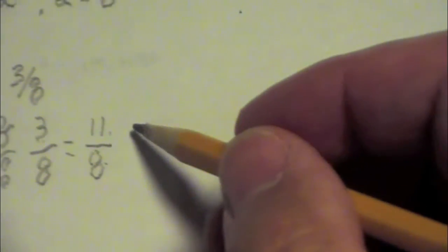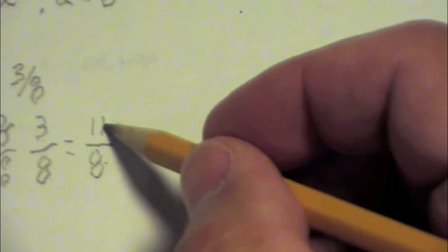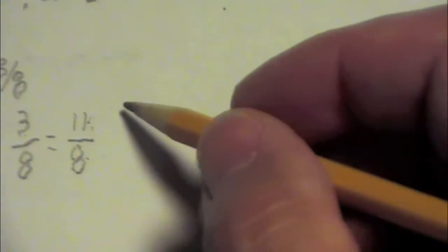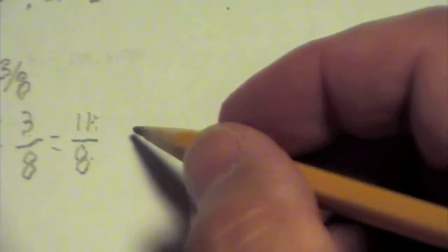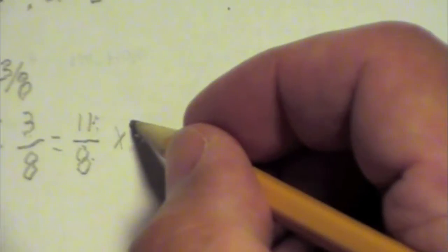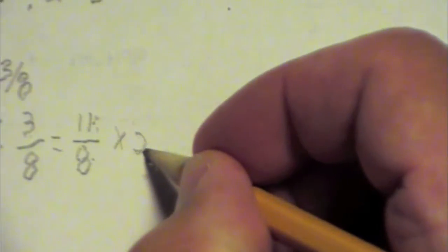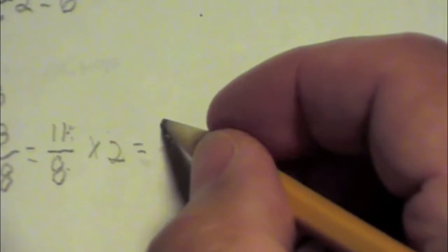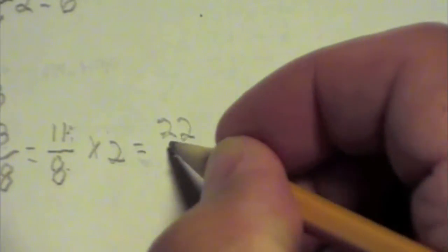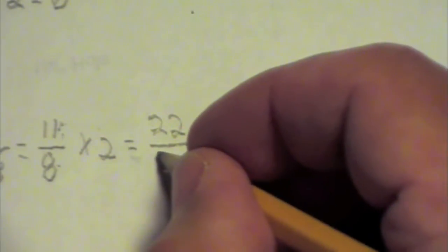So one and three-eighths equals eleven-eighths. We can't really divide that in half. Because we can't have, well what's half of eleven? That would be five and a half. We can't have five and a half eighths. So we have to raise this number higher to a number we can work with. So let's multiply both numbers by two and see what we get. That's going to equal twenty-two over two times eight, sixteen.